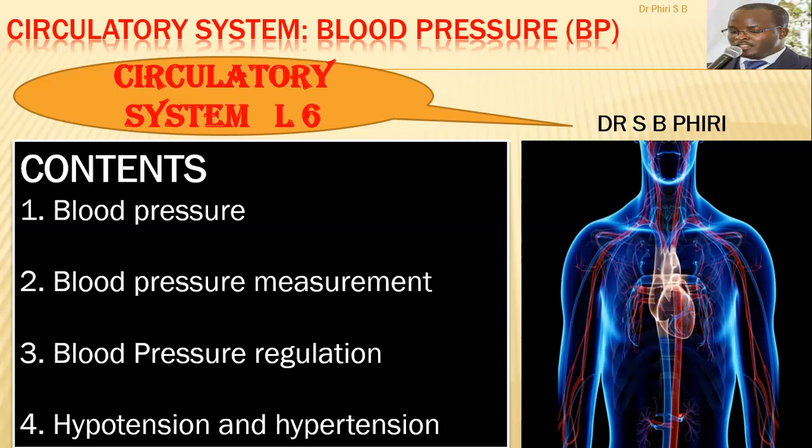Blood pressure is a very important aspect of the circulatory system because it maintains blood perfusion to the tissues. Without blood pressure, tissues don't receive oxygen or nutrients, and cells can start dying. That's why it's very important to regulate blood pressure within the normal range. By the end of this class you should be able to describe blood pressure, its measurement, regulation, and disorders such as hypertension and hypotension.